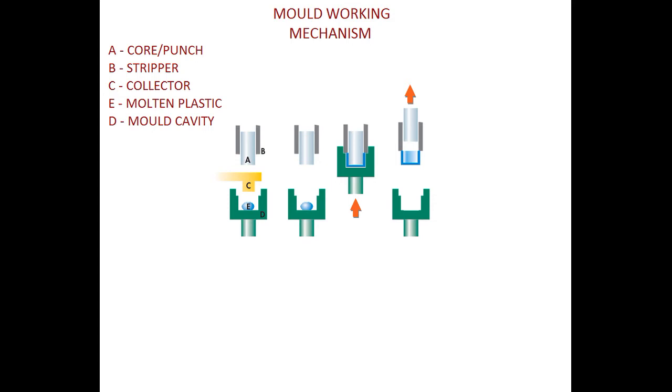Core is the part which compresses the molten plastic into the cavity part of the mold, and hence due to compression the caps are formed. Collector is the part which brings the molten plastic towards the mold cavity, and stripper acts as a guider for the punch as you can see in the figure.